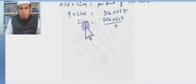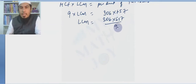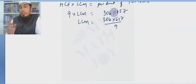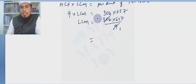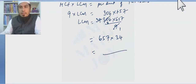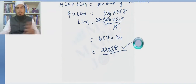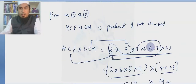We cancel 9 from the numerator since HCF is a common factor that divides both numbers. Cancelling 9 from 306 gives 34. So LCM equals 657 times 34. After multiplication, the answer will be 22,338. In this way we can directly find LCM using the fundamental theorem: HCF times LCM equals product of two numbers.